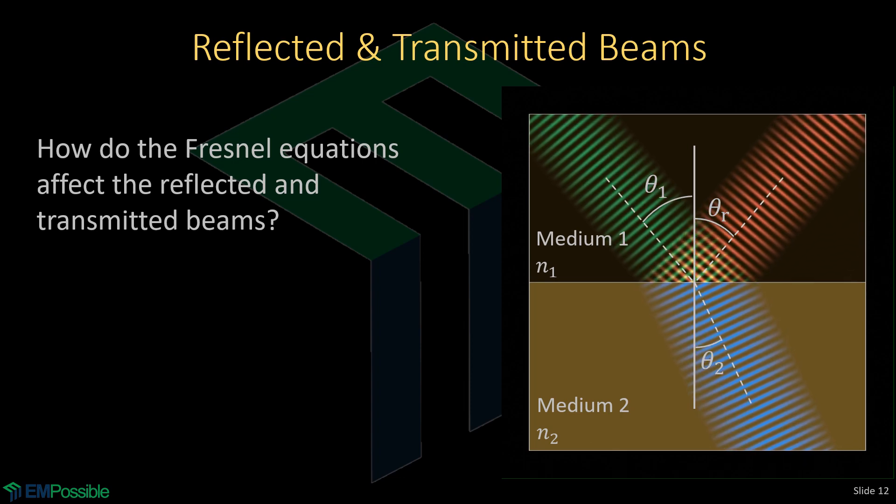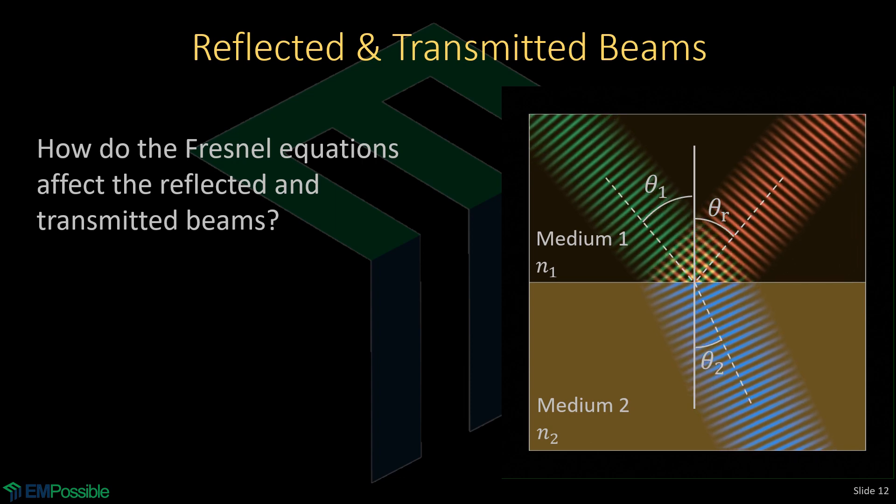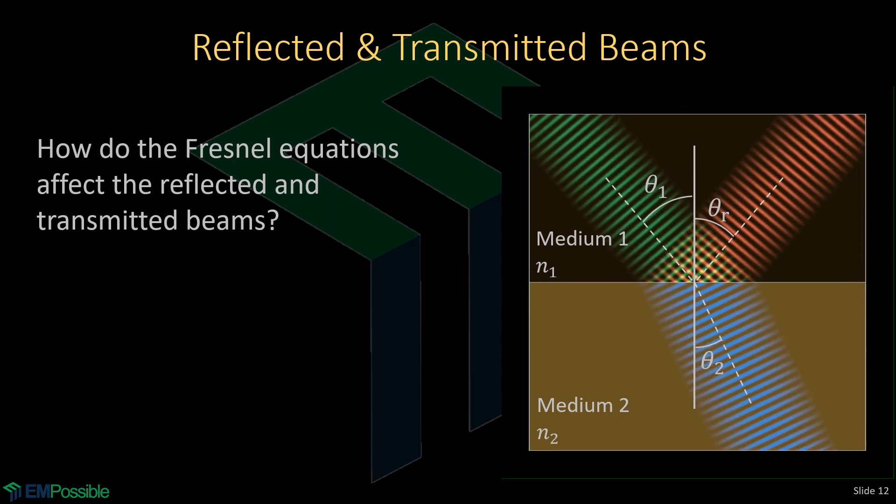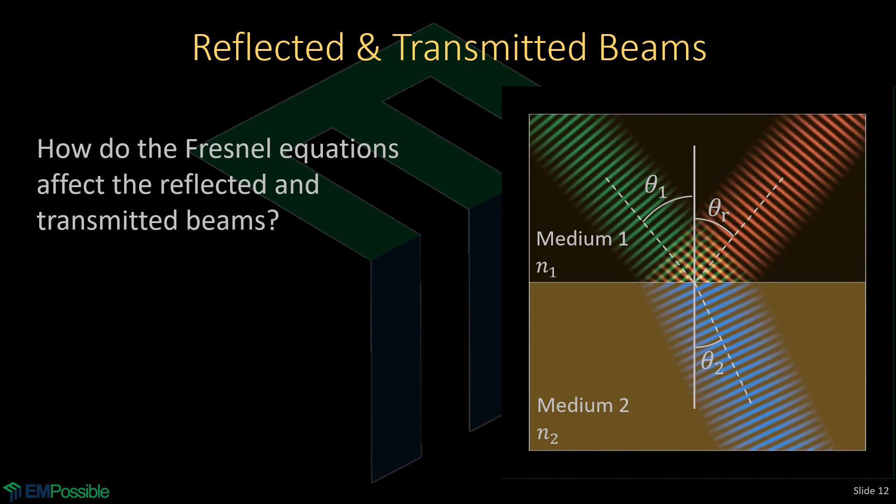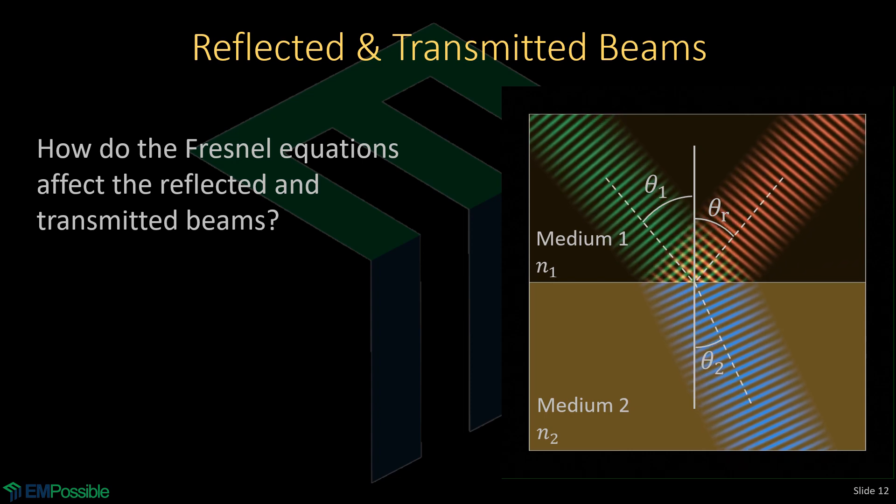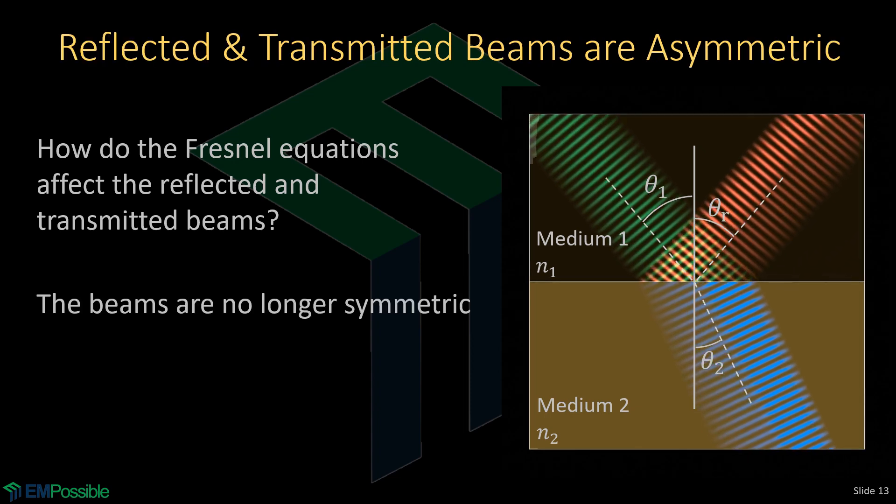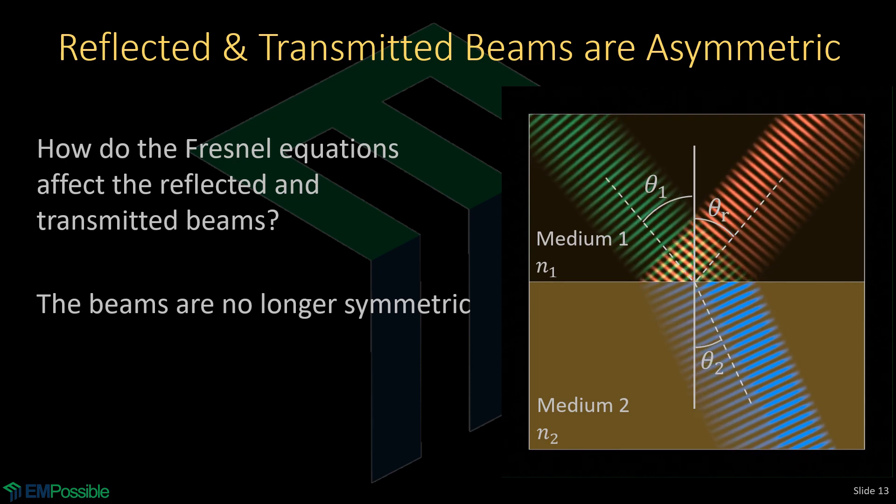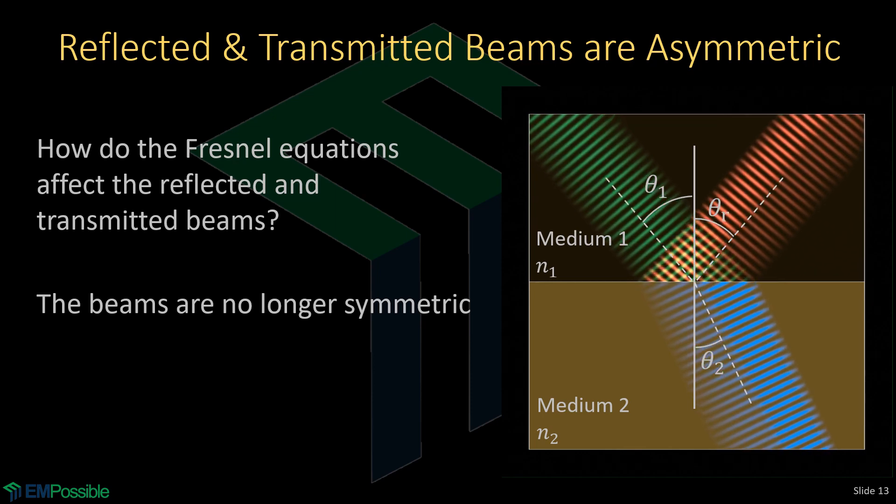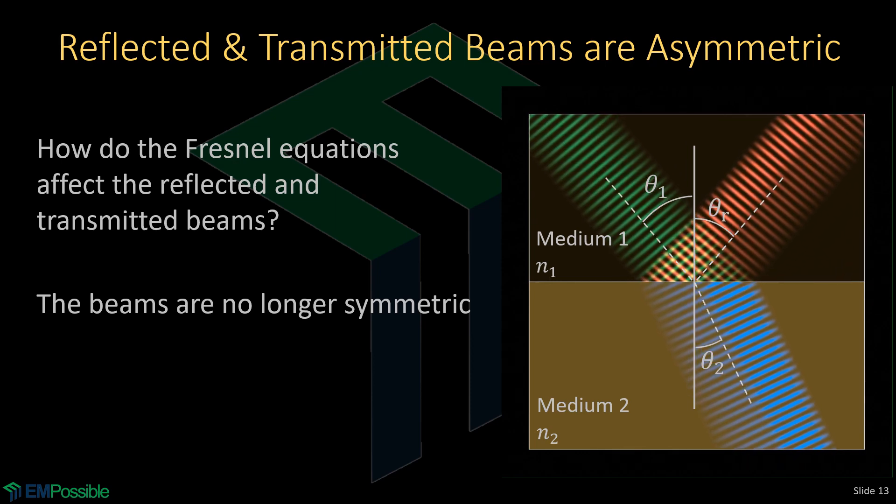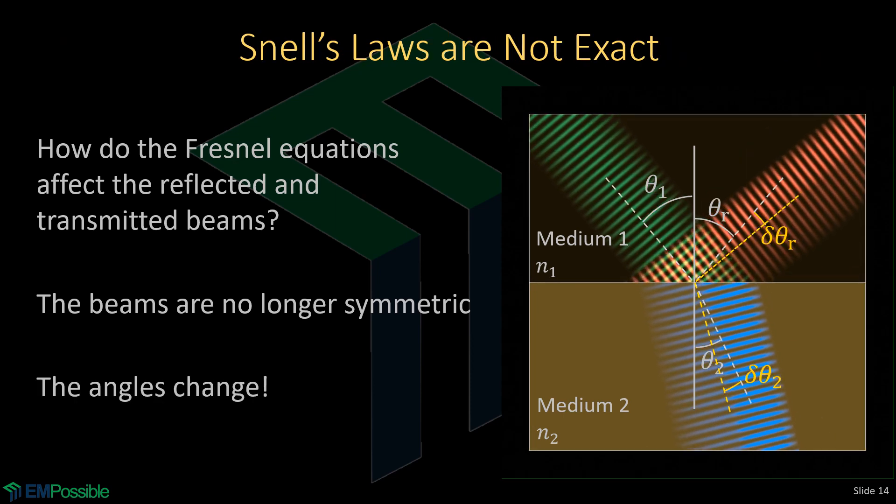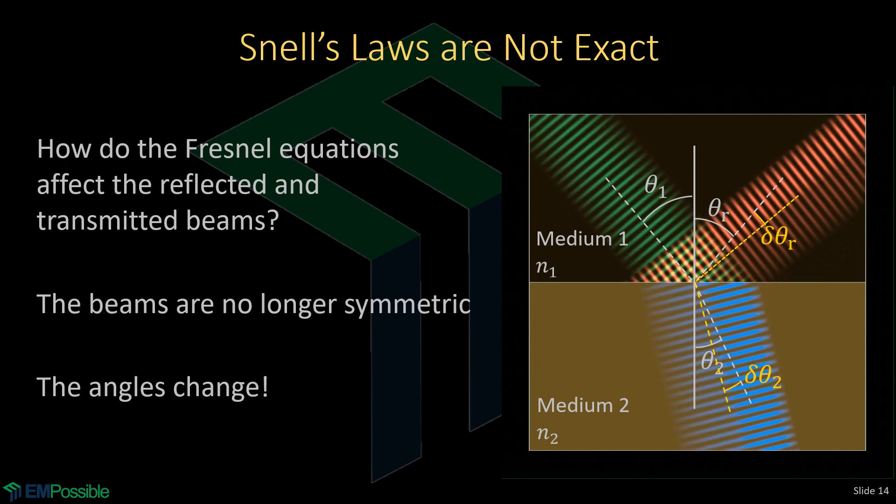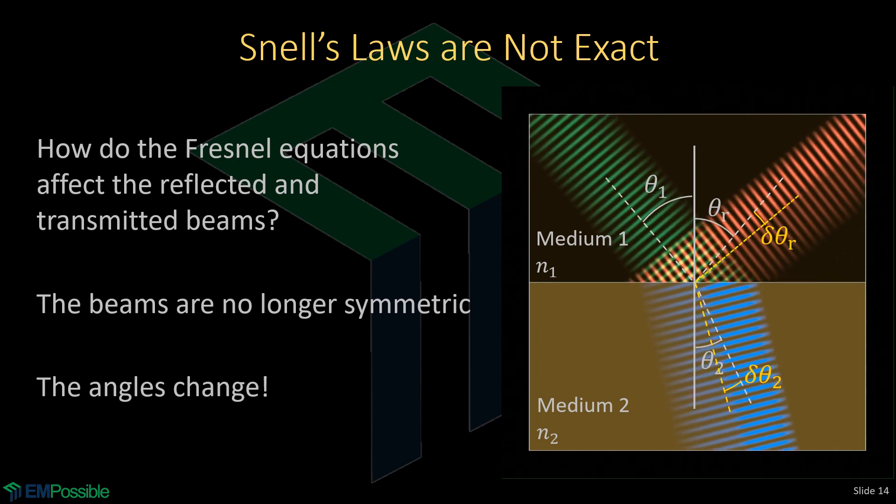We also know something else: that waves at different angles will have a different amplitude upon reflection or transmission due to the Fresnel equations. So when that beam reflects, that beam can't look like the incident beam. And in fact, due to the Fresnel equations, the reflected and transmitted beams are a bit asymmetric. Well, asymmetric beams don't propagate in the directions that we think. And in fact, they propagate away at slightly different angles.